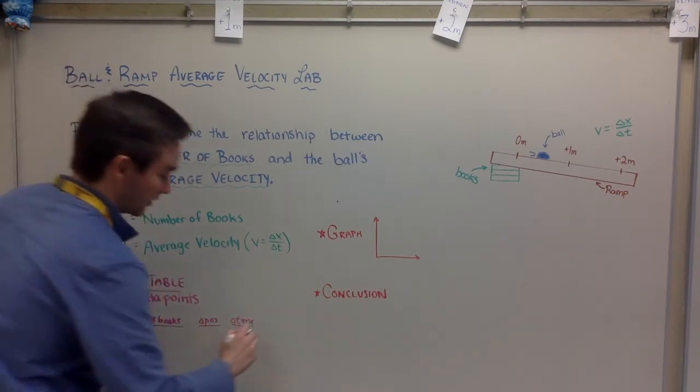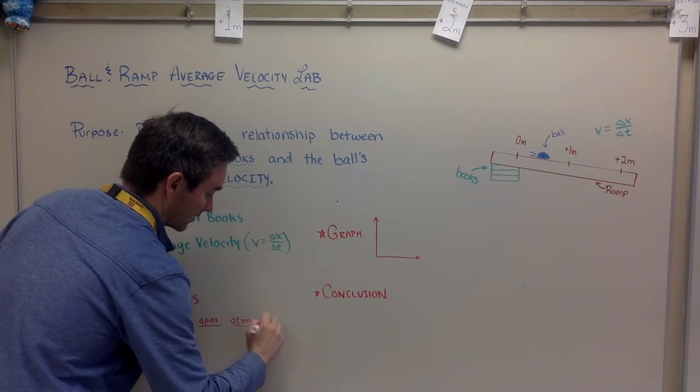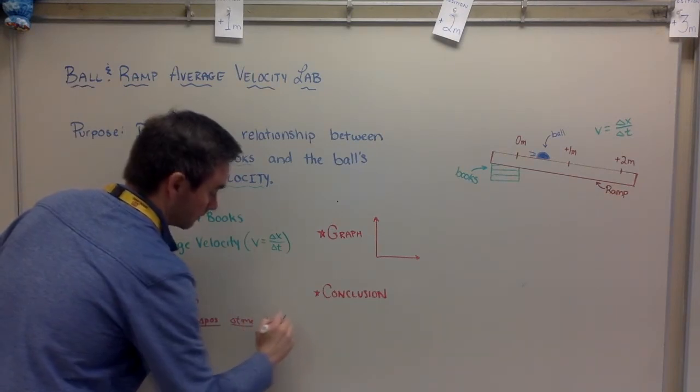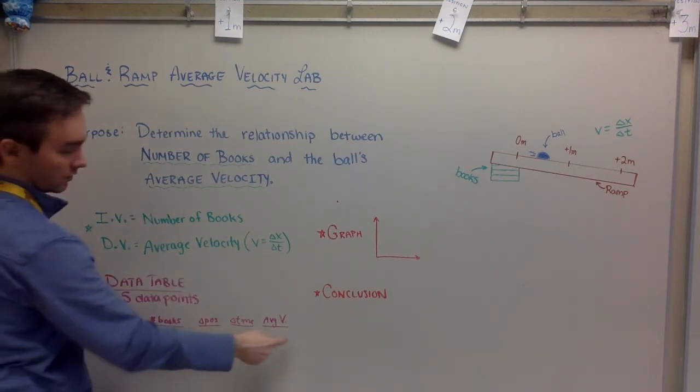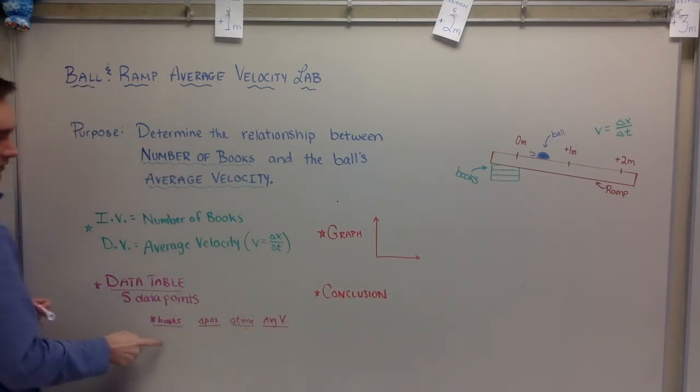Then from there you can calculate the average velocity. So in the end, even though you needed to collect these two, we're going to be measuring, comparing this one to this one, because those are our variables. So we're going to be graphing this versus this.